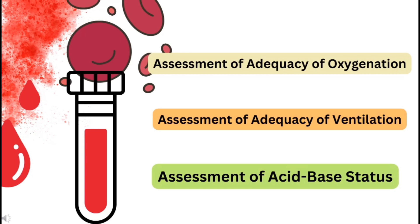Secondly, it also assesses the adequacy of ventilation. The third point is this test also shows pH values, and this pH will decide the blood acidity or blood alkalinity. A more acidic pH in blood is very bad, and similarly an alkaline environment or raised pH is also not good for the organs. So this test will help us about these few very important mechanisms.